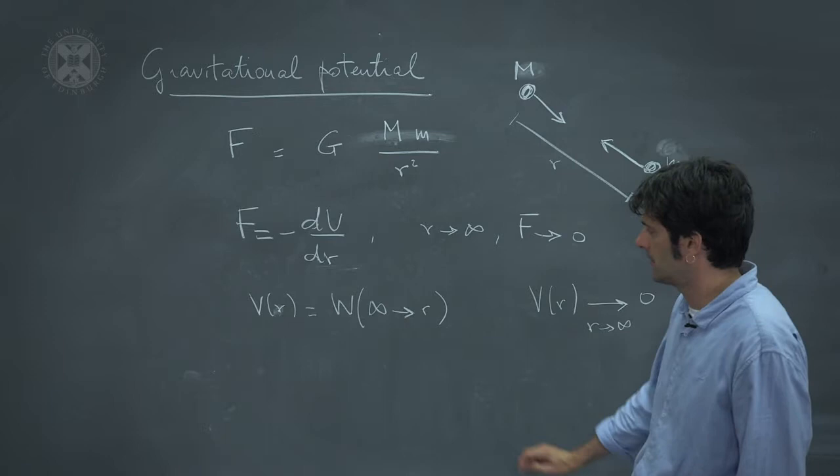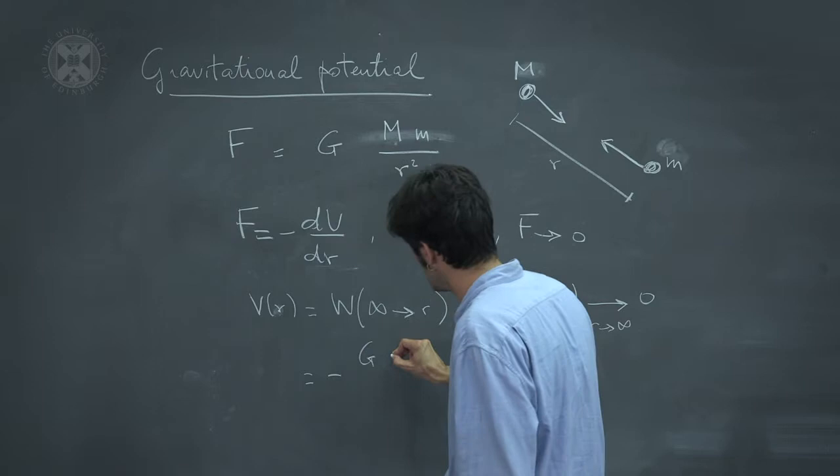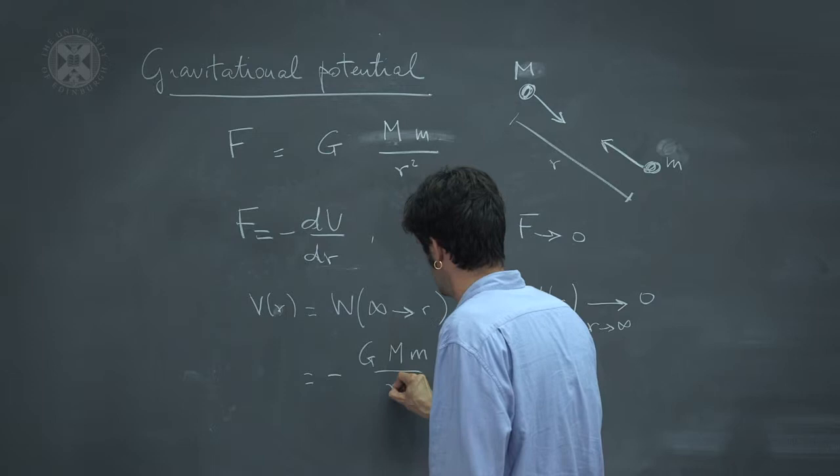I'm not going to do the computation explicitly here. I'm just going to state the result. The potential here is going to be minus G, Newton's constant, times M divided by r.